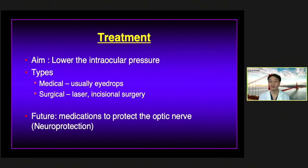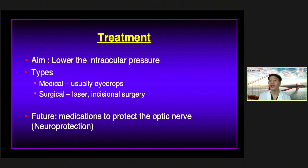I'll talk briefly about treatment. Dr. Paul Singh will talk later in more detail about treatments including some of the newer surgeries, but I'll give a broad overview. The only approved treatment for glaucoma is lowering the intraocular pressure. This can be through medical treatment — usually eye drops, with four or five classes to choose from — or you may advance to laser or incisional surgery. Laser is now often used as a first-line treatment because it is very safe. We hope in the future to have medications that will directly protect the optic nerve through neuroprotection, besides just lowering intraocular pressure.